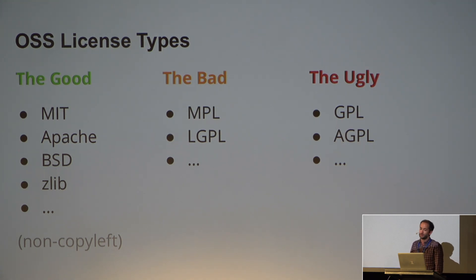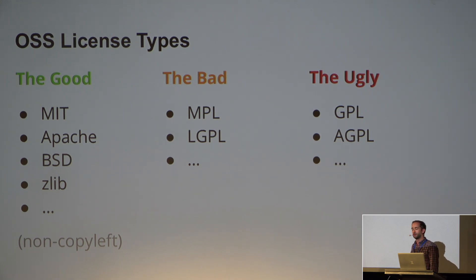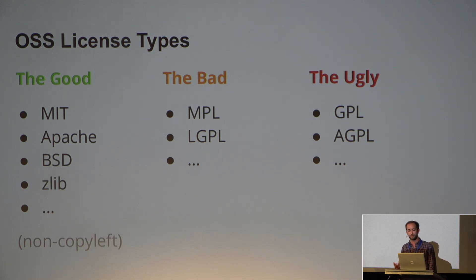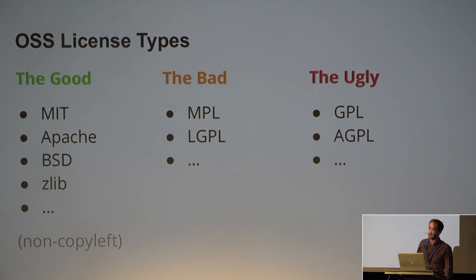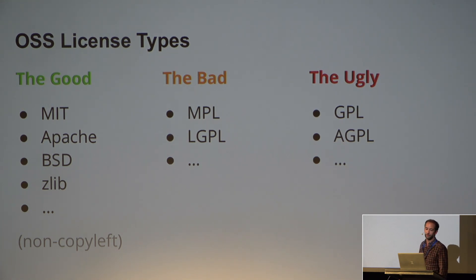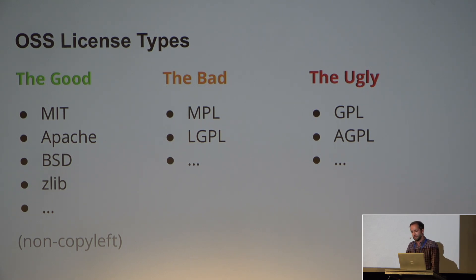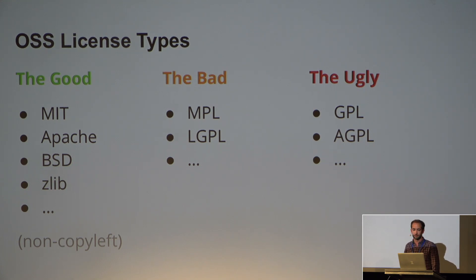There are different open source software license types — I called them the good, the bad, and the ugly. Some of you might agree. We all know MIT, Apache, and BSD licenses, and probably some of you know the zlib license. Those are what I call the good licenses because they're very permissive — there's no copyleft effect, so you can just go ahead and use them and do basically everything you want.